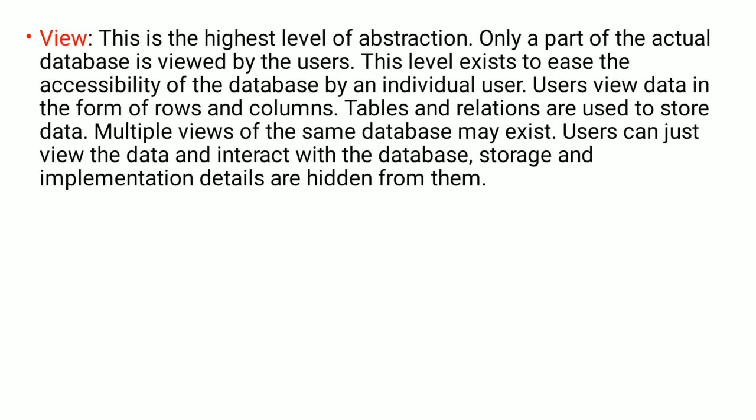The view level can provide multiple views of the same system. For example, a clerk at a reservation system can see only part of the database and access the passenger's required information. Taking an example of an employee record with fields: employee ID, employee name, department number, and salary — at the physical level, the record for employee and department can be described as a block of consecutive storage locations.